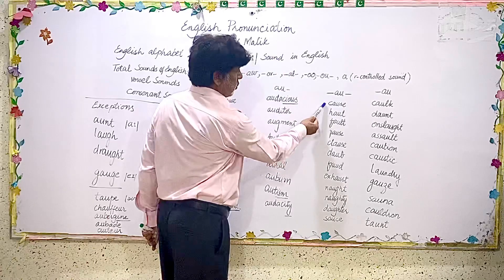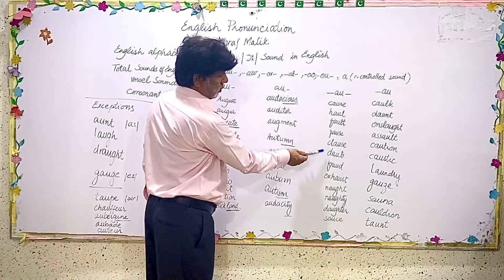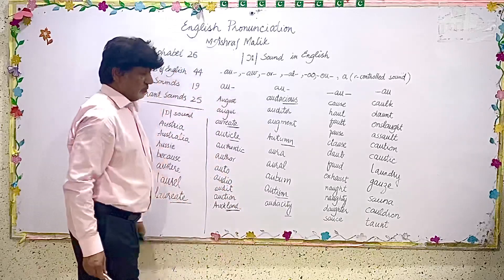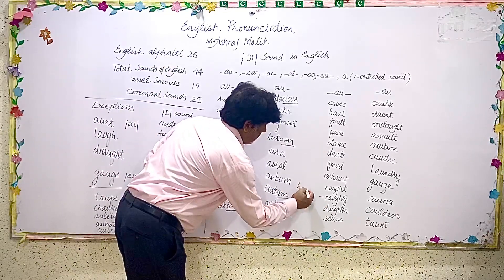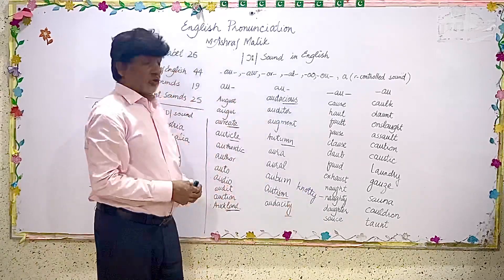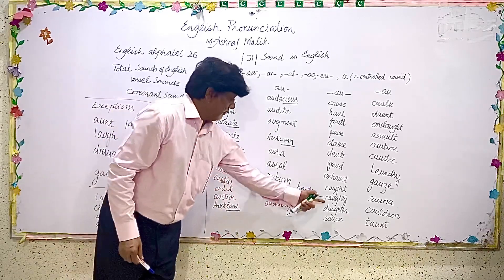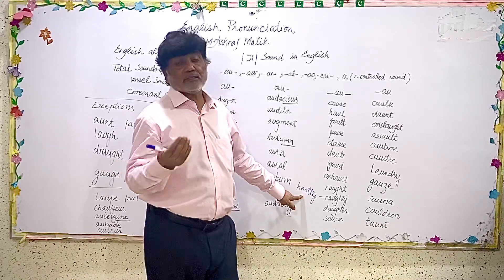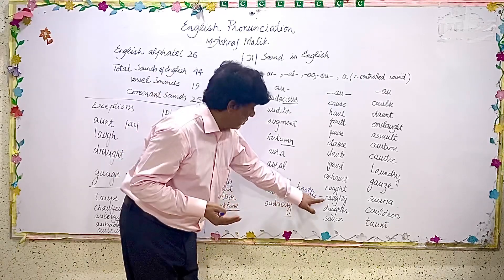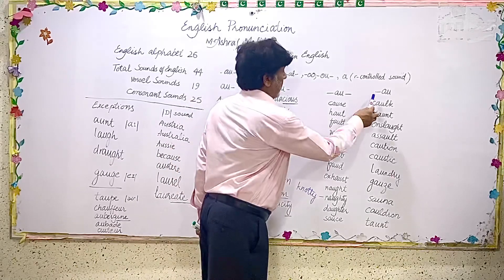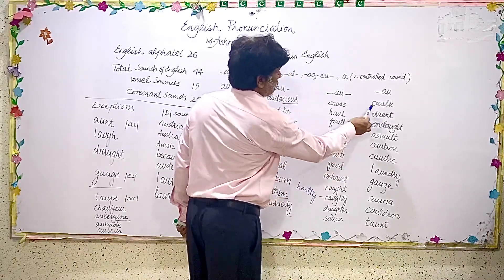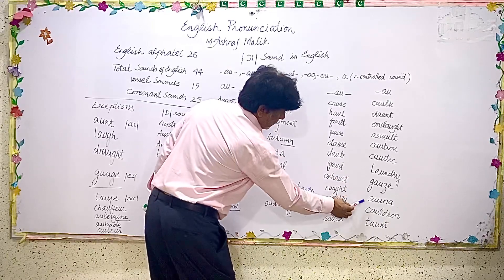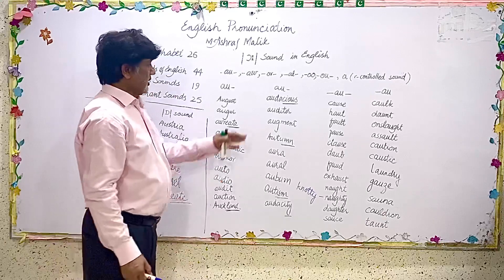When AU occurs in the middle of words, we have so many words: cause, whole, pose, close, though, exhaust. Just remember — if you give a slight change and call it 'naughty,' the word will have a different meaning. By slightly opening the mouth, a slight change in pronunciation changes the entire meaning. This is 'naughty,' 'daughter,' 'source.' And when AU comes in the middle: don, onslaught, assault, caution, caustic, laundry, sauna, golden, taught.